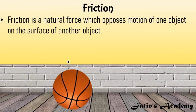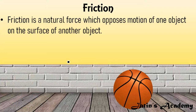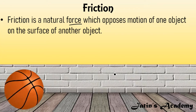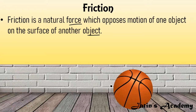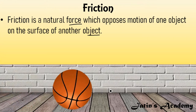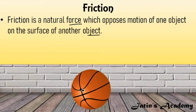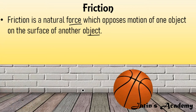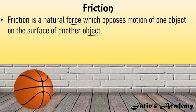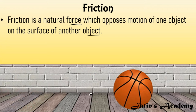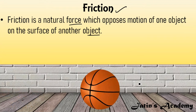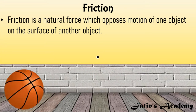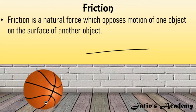Next we have friction. Friction is a natural force which opposes the motion of one object on the surface of another object. For example, when you throw a ball on a surface, that ball stops after some time — it doesn't keep moving forever. The force between the ball and the surface that slows it down is the frictional force, or friction.